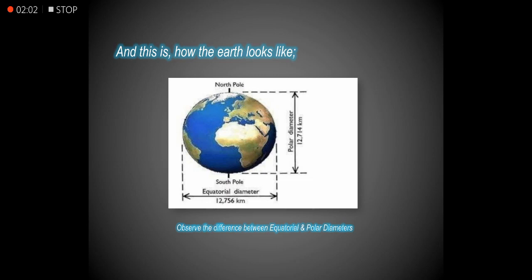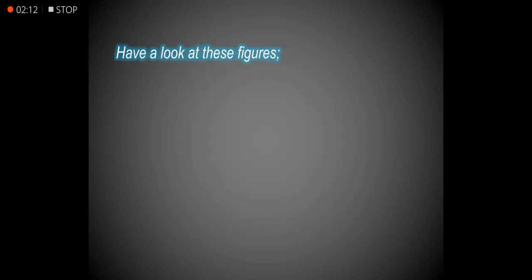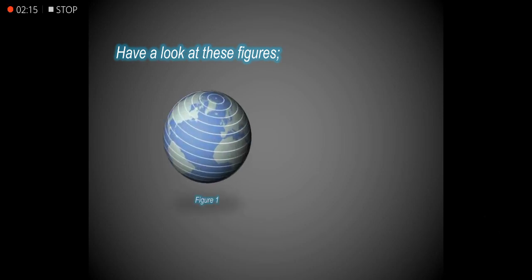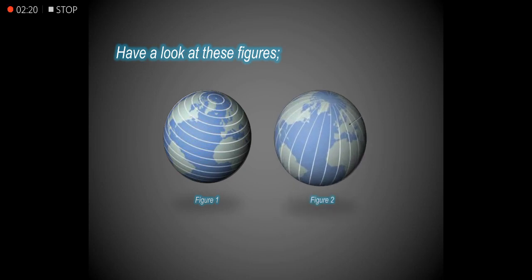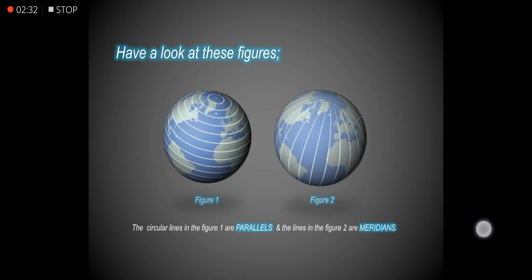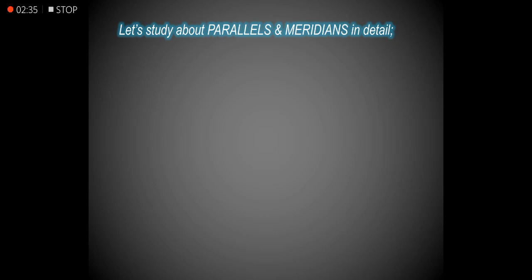Observe the difference between equatorial and polar diameters. The equatorial diameter is greater than the polar diameter. Have a look at these figures — figure 1 shows parallels and figure 2 shows meridians. Let's study about parallels and meridians in detail.